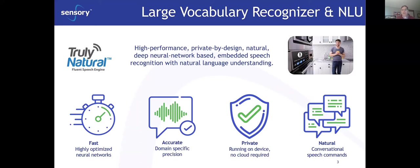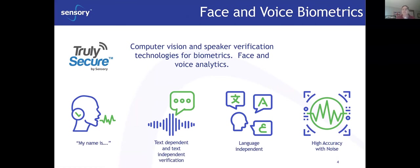Everything we're doing is on-device, so it's very private — no cloud required, no hackability. You just turn it on and start using it, no Wi-Fi connection needed. The beauty of Truly Natural is it provides natural language conversations. Our third product is called Truly Secure — our face and voice biometrics. We support computer vision for face recognition, currently used by many banks and millions of mobile phones, and voice speaker verification supporting both text-dependent and text-independent. All these technologies are language independent and our focus is always on high accuracy in noise.